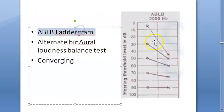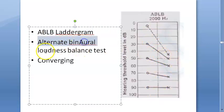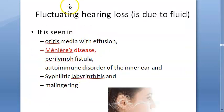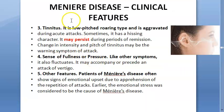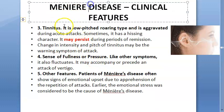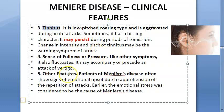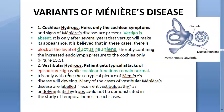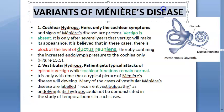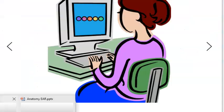In the ABLB (alternate binaural loudness balance) laddergramme, convergence is seen due to the recruitment phenomenon. Fluctuating hearing loss is due to the fluid changes, and tinnitus may persist between attacks of vertigo.